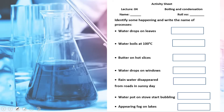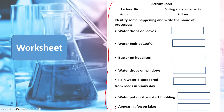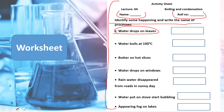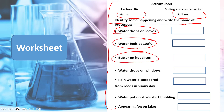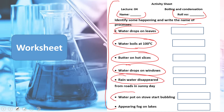Now is the time for practice — you can download this worksheet from the description box below this video or get it in print form from your teacher. Write down your name and roll number. Identify what is happening and write the name of the process: water droplets on leaves — condensation; water boils at 100 degrees centigrade — boiling; butter on hot slice — melting; water droplets on windows — condensation; rain water disappeared — evaporation; water pot on stove starts bubbling — boiling; appearing fog on lakes — condensation.